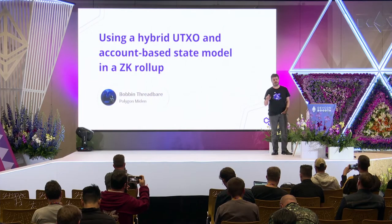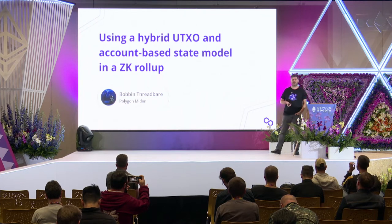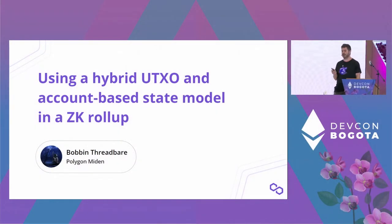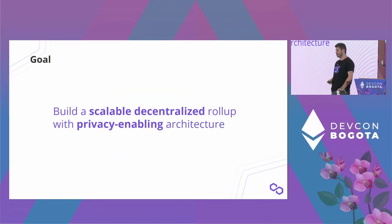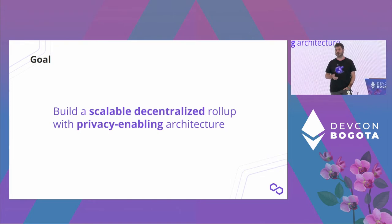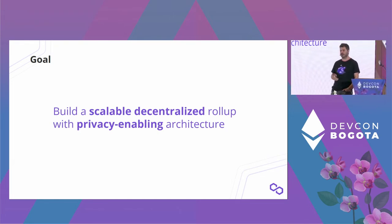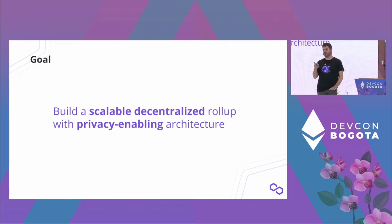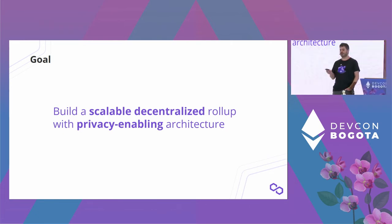In my talk today, I'm going to be talking for the first time about how we've designed Polygon-Modern Rollup, and specifically how we use this hybrid UTXO and account-based model to achieve some interesting properties. The goal we have in mind is to build a scalable decentralized rollup with privacy-enabling architecture. Our immediate goal is to achieve scaling, but we want to design the rollup so that when we want to turn on privacy, it will not require a complete architecture overhaul.